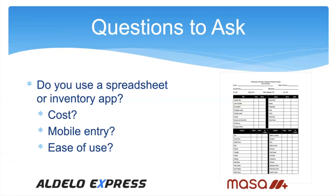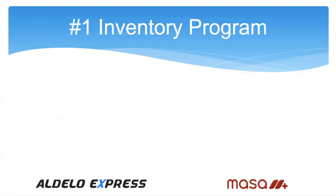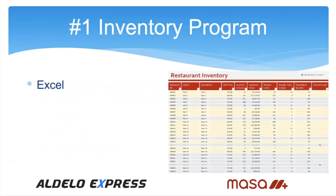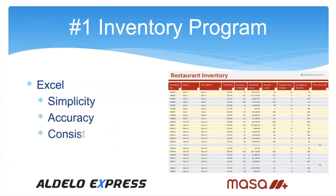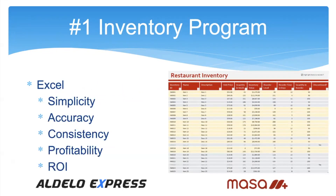The number one inventory program for small to medium independent restaurants is an Excel spreadsheet. They get templates online and adjust them for their individual ingredients. It's simple, could be accurate, consistent — turn it on and it works. There's not much of a return on investment, but that's your competition: which template are they using, and how are you going to be better than that?